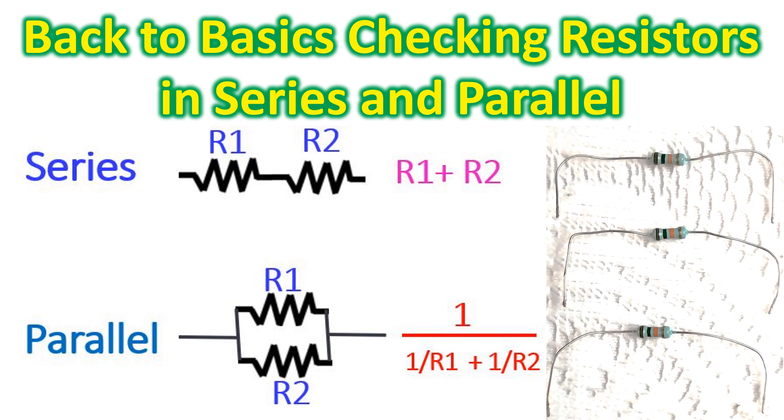Checking the total value of resistors connected in series is rather simple. You just have to add the total values of each resistor and you get the final value.